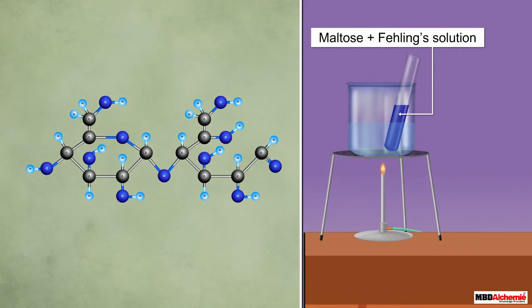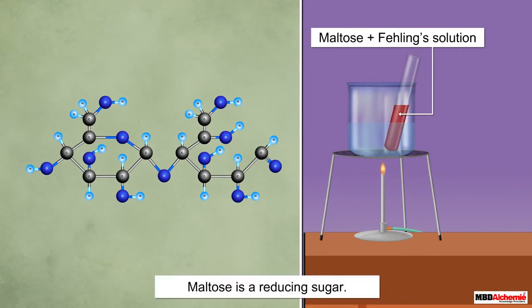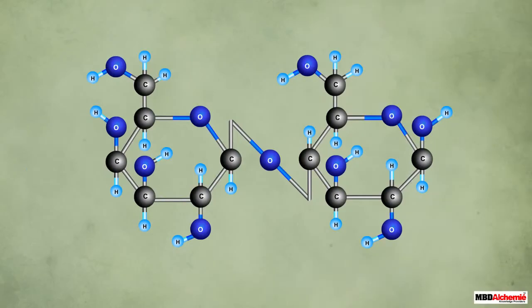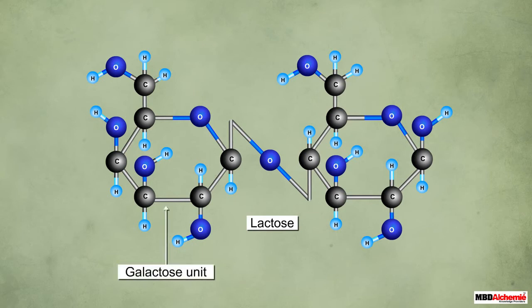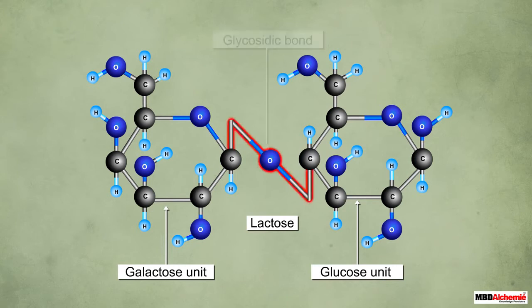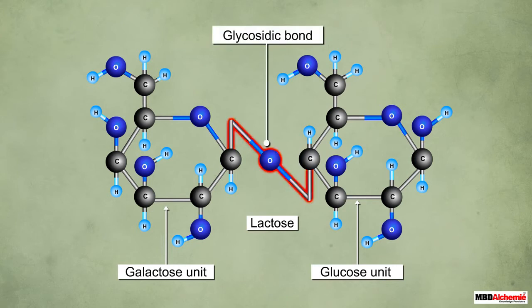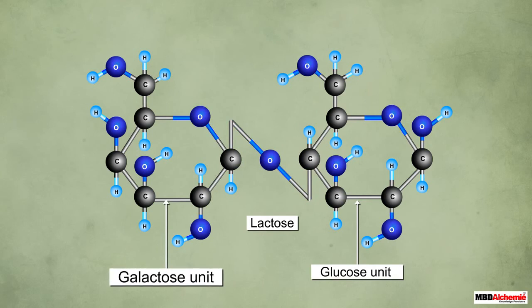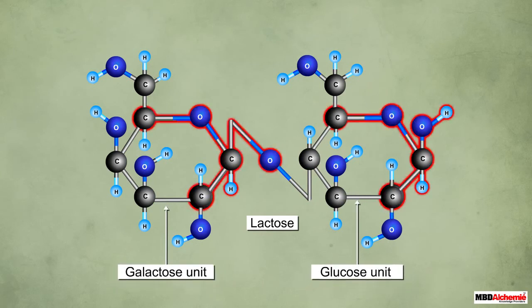The free aldehyde group enables maltose to be oxidized by Fehling's solution, thus making it a reducing sugar. Similar to maltose, lactose is also a disaccharide with one galactose unit and one glucose unit joined together by a glycosidic bond.